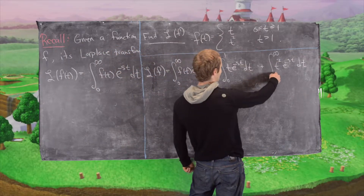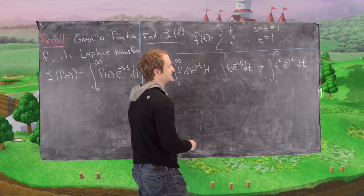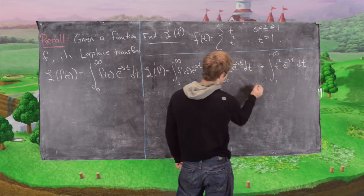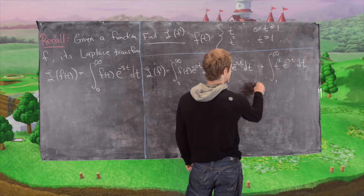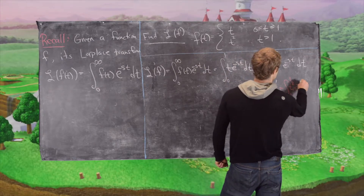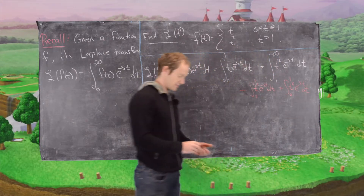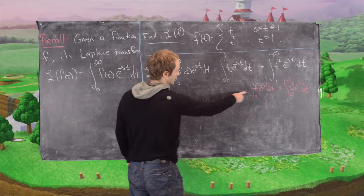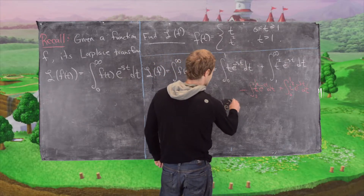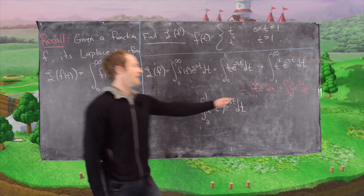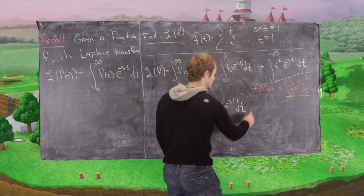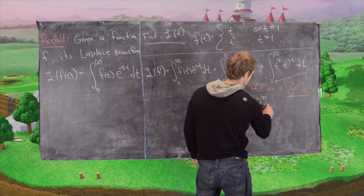Now we're going to use a trick: subtract and add the integral from 0 to 1 of t squared e to the minus st dt. Subtracting it, we combine the first integral to get the integral from 0 to 1 of (t minus t squared) e to the minus st dt. Adding it back, we combine with the second integral to form the integral from 0 to infinity of t squared e to the minus st dt.